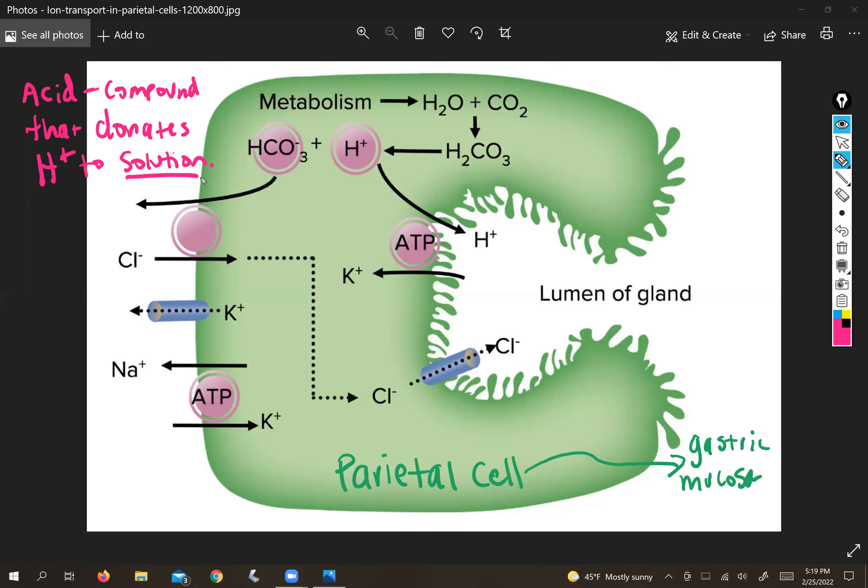That basically makes your capillaries in your stomach wall permeable and allows water to leak out of your blood, and then that water gets combined with protons here for a nice low pH gastric juice.